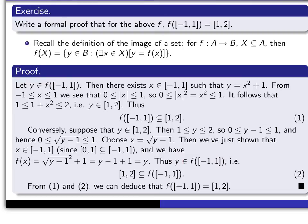Let y be in f of [minus 1, 1]. By the working definition, there exists an x in [minus 1, 1] such that y equals f of x, or x squared plus 1. Since x lies between minus 1 and 1, the absolute value of x lies between 0 and 1. Squaring gives x squared between 0 and 1, and adding 1 gives a quantity between 1 and 2. Therefore y is between 1 and 2, which proves this inclusion.